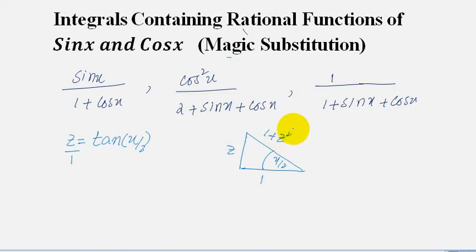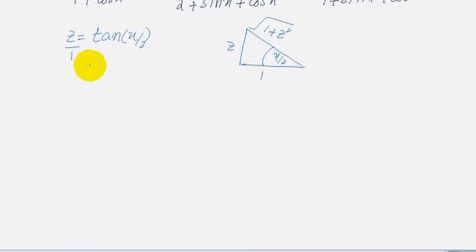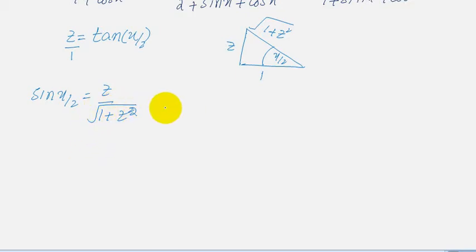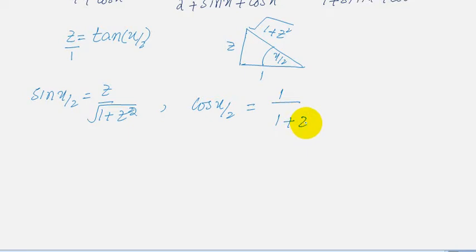By the Pythagorean theorem, the hypotenuse can be written as √(1+z²). Now we can find relations for sine and cosine. Since sin(theta) equals perpendicular over hypotenuse, sin(x/2) equals z over √(1+z²). Similarly, since cos(theta) equals base over hypotenuse, cos(x/2) equals 1 over √(1+z²).